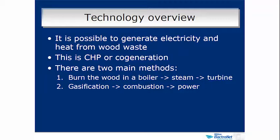It is possible to generate electricity and heat from wood waste — this is called CHP or cogeneration. The two main methods are: first, you burn the wood in a boiler, get steam, and use that to drive a turbine which drives an electrical generator — a conventional boiler system, which everyone's been talking about today. Conventional boilers are well-proven technology, scalable from any size — from kettle size right up to huge power stations. Well-established, cheap, and proven.